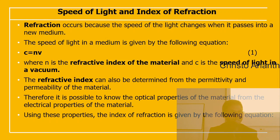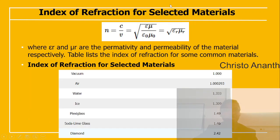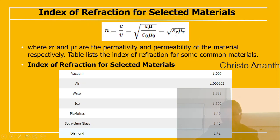The index of refraction is defined as N = C/V, which can also be written as the square root of (εμ / ε₀μ₀), where εᵣ is the relative permittivity and μᵣ is the relative permeability. Refractive indices for selected materials include: vacuum/air ≈ 1.000293, water 1.333, ice 1.309, plexiglass 1.49, soda lime glass 1.46, and diamond 2.42.